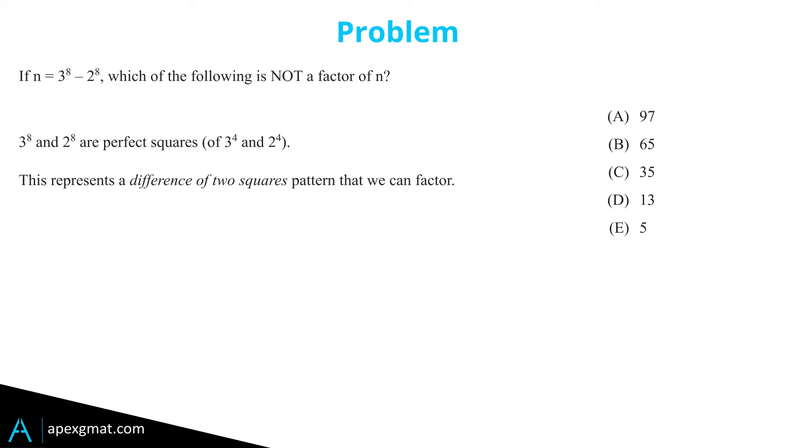Notice that 3 to the eighth and 2 to the eighth are both perfect squares. So we have the opportunity to factor this into 3 to the fourth minus 2 to the fourth times 3 to the fourth plus 2 to the fourth.